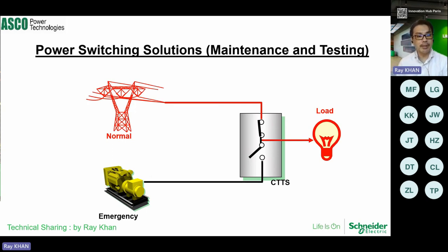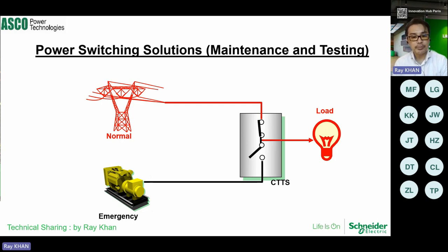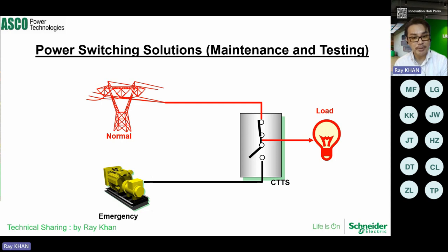Next, regarding the maintenance aspect: projects like data centers or airports may require ATS testing every few weeks. The issue is that testing affects the actual load. With closed transition, a make-before-break occurs between 40 to 70 milliseconds. The generator starts, power between the two sources is ensured, then the make-before-break transfer occurs with minimal interruption. Using an ATS is much more preferred even for maintenance aspects compared to using three circuit breakers for make-before-break. Gensets are normally tested on a monthly basis.